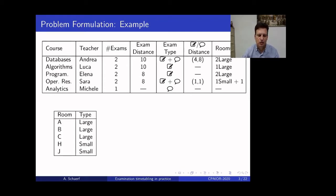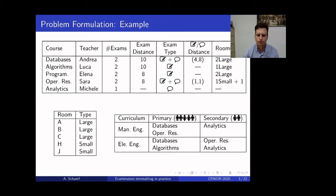So, these are the rooms, large and small. And then we have curricula. So, this is a curriculum-based formulation. For example, management engineering has two primary courses and one secondary course. Primary courses are those which are taken by all the students, so there will be more students showing up at the exam, and secondary ones are taken only by part of the students.